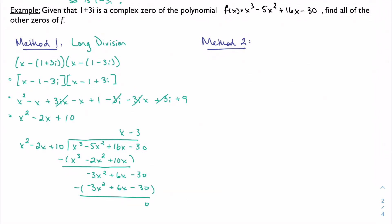So my other zeros, well, my full factorization now includes this x minus 3. So if x minus 3 is a zero, then the other zero is positive 3. So my zeros are 1 plus or minus 3i and 3.